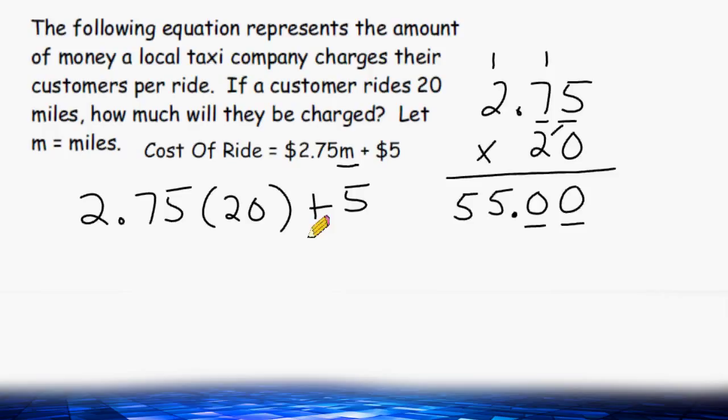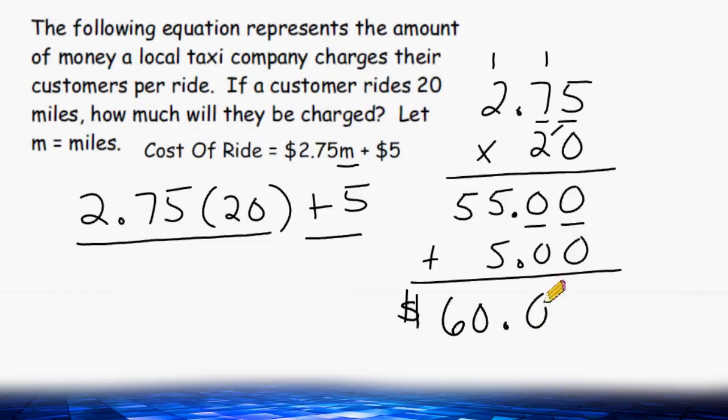But don't forget we still have to add $5 to the product of $2.75 and 20. If we add 5 more dollars to $55, that would be a grand total of $60. So this taxi company would charge $60 total if a customer were to ride a distance of 20 miles.